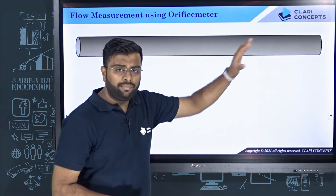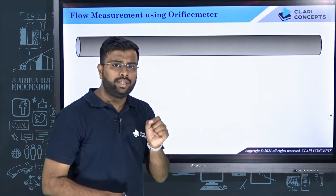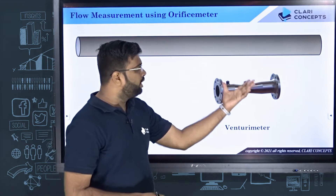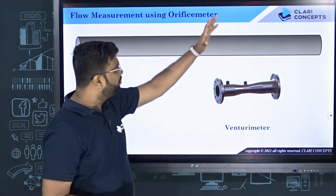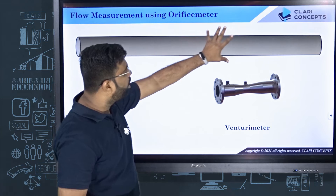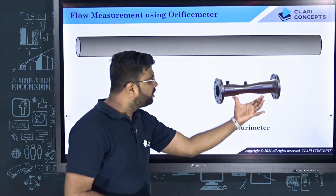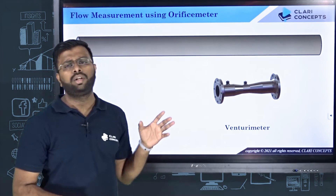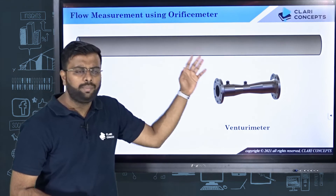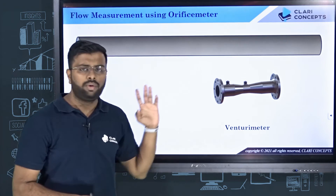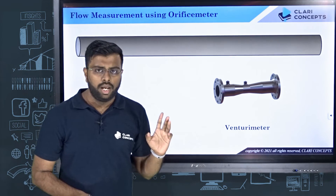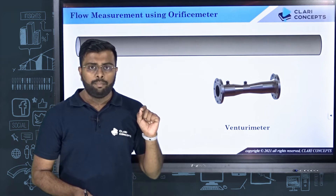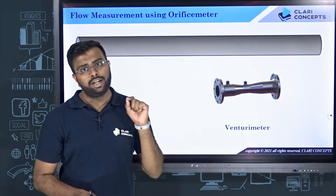One of them, which we saw previously, is the venturi meter. Say you have a pipe through which a fluid is flowing, and if you want to calculate the discharge or the flow rate, you can deploy a venturi meter. Simply cut out a small section of the pipe, insert the venturi meter, and you can easily measure the flow rate.